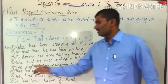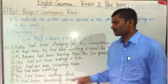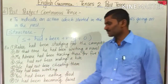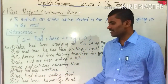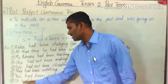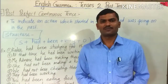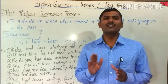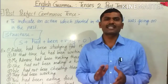Examples of past perfect continuous tense: 'We had not been cheating then.' 'They had been working.' 'You had been eating food.' 'It had been becoming fat.' In the next video, you will learn the future tense. Thank you.